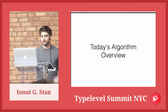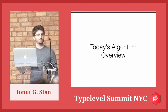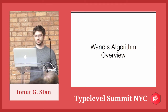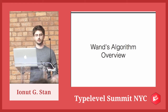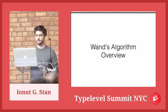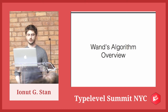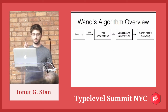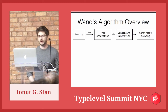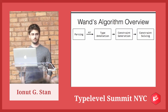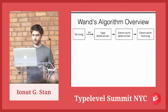Today's algorithm is from Wand, from 1987. It's a very simple one. I chose it because it's very good for teaching — it has a very clear separation of concerns. It's also scalable for other type systems. It's composed of three parts: a type annotation phase, a constraint generation phase, and a constraint solving phase. The parsing part is outside the algorithm per se.